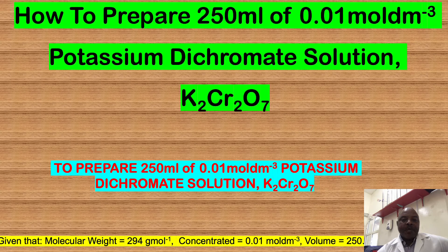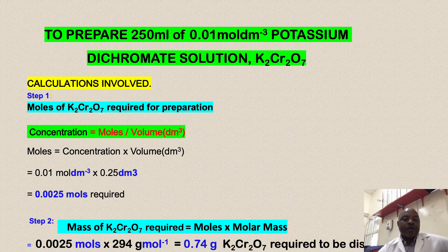Based on this information, the calculations involved are as follows. We have to determine, step number one, the number of moles of potassium dichromate required for the preparation.